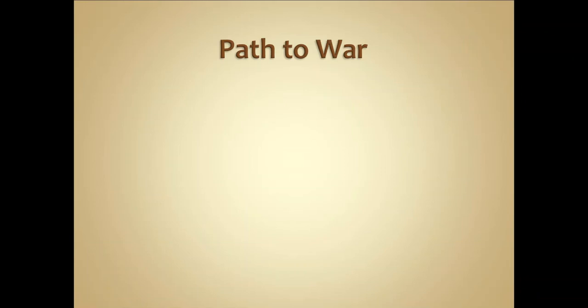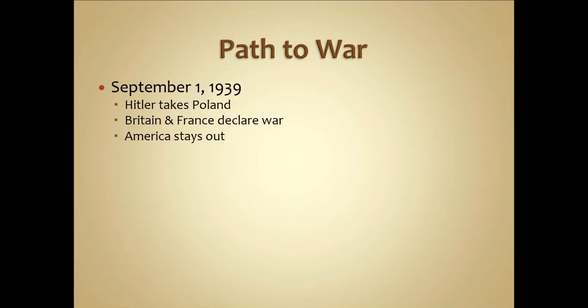This is lecture number two on World War Two. We left off talking about the early eras of aggression and the rise of totalitarian regimes within Europe. Hitler was expanding the German Empire and had just made the non-aggression pact with the Soviet Union, which gave him the green light to invade Poland. On September 1st, 1939, Hitler invades Poland using his new military tactic of blitzkrieg — going in by air and by land. Poland, being a young new country, did not have the sophisticated weaponry of the German army and was easily decimated.